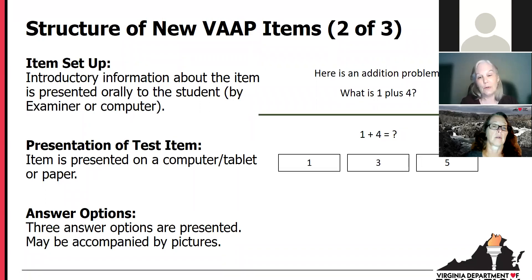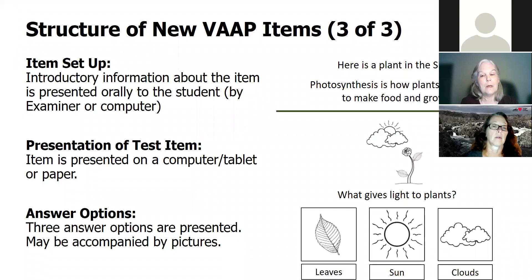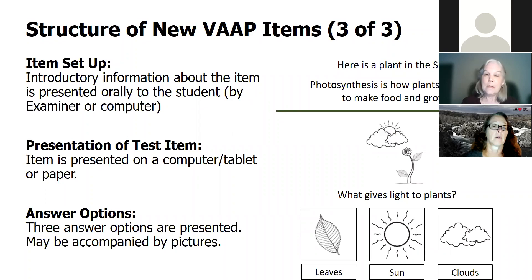And then lastly, we'll look at a science item. Here is a plant in the sun. Photosynthesis is how plants use light to make food and grow. What gives light to plants — leaves, sun, clouds. Again, the answer options are accompanied by pictures. That gives you an idea of what the items look like and how the students will interact with them.